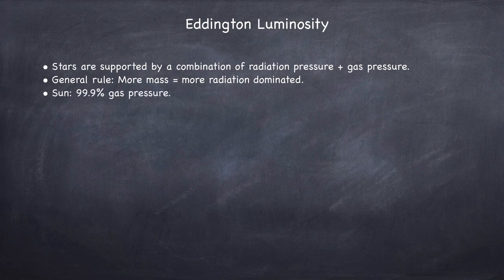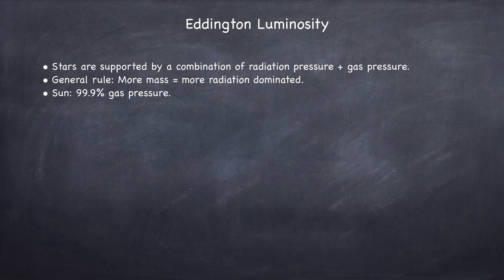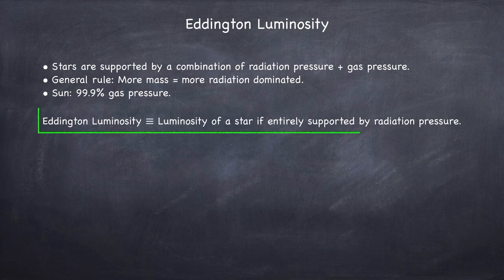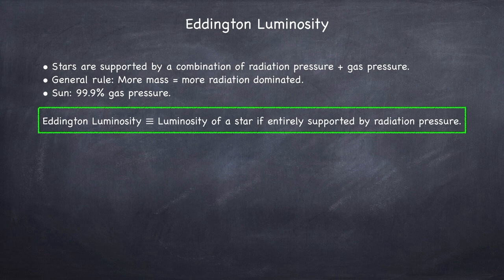The Sun, for example, is about 99.9% gas pressure. The Eddington luminosity is defined as the luminosity of a star if entirely supported by radiation pressure.